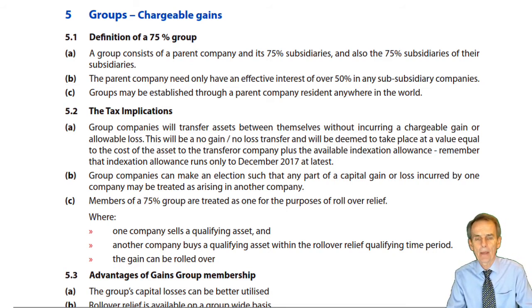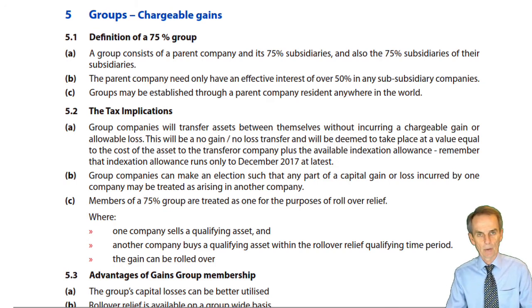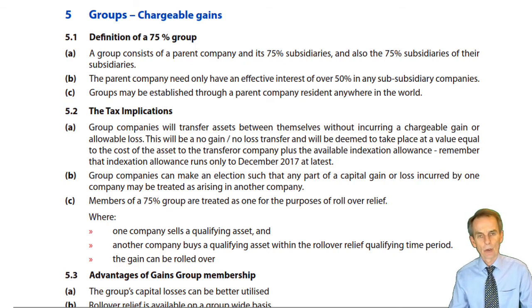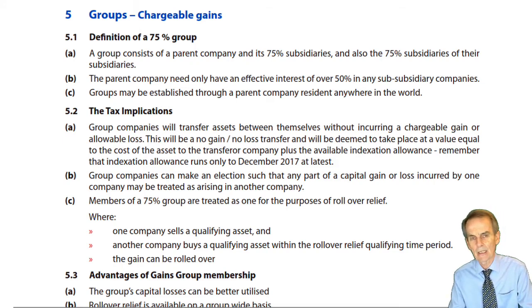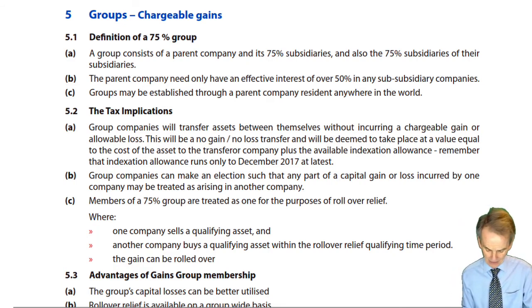Rules whereby HMRC say that if you do this, you'll do it this way — no choice. This is a rule; if you proceed to make that transaction, this is how it's dealt with for taxation purposes. And then, over and above that, here are claims and elections that can be made by the corporate taxpayer to improve the tax position. There are two such claims or elections that can be made, and one rule that applies whenever we deal with a specific type of transaction. This is under the general heading of 75% groups, but with a slightly different definition of what we mean by 75% groups compared to group relief of losses — specifically in the area of indirect subsidiaries.